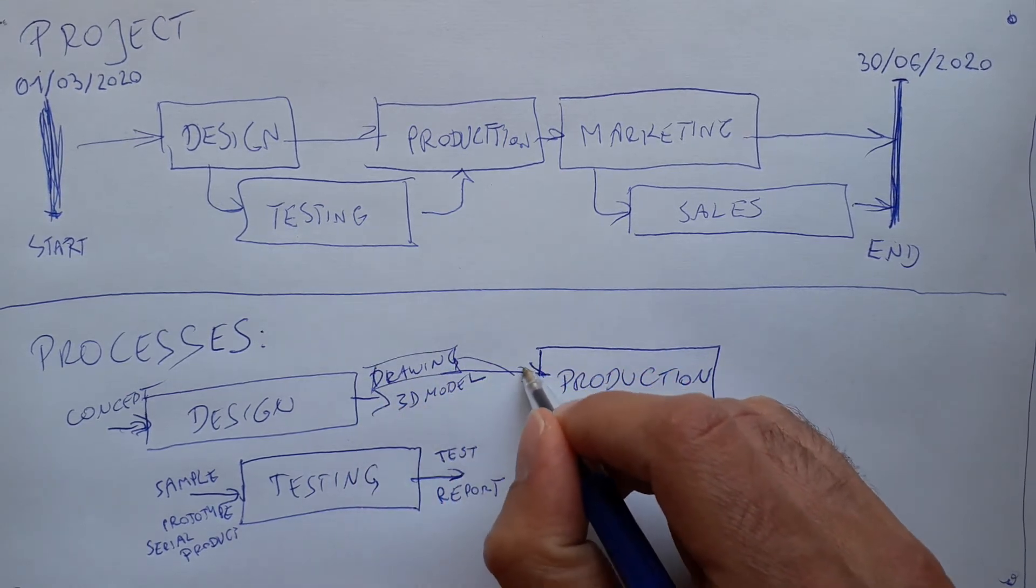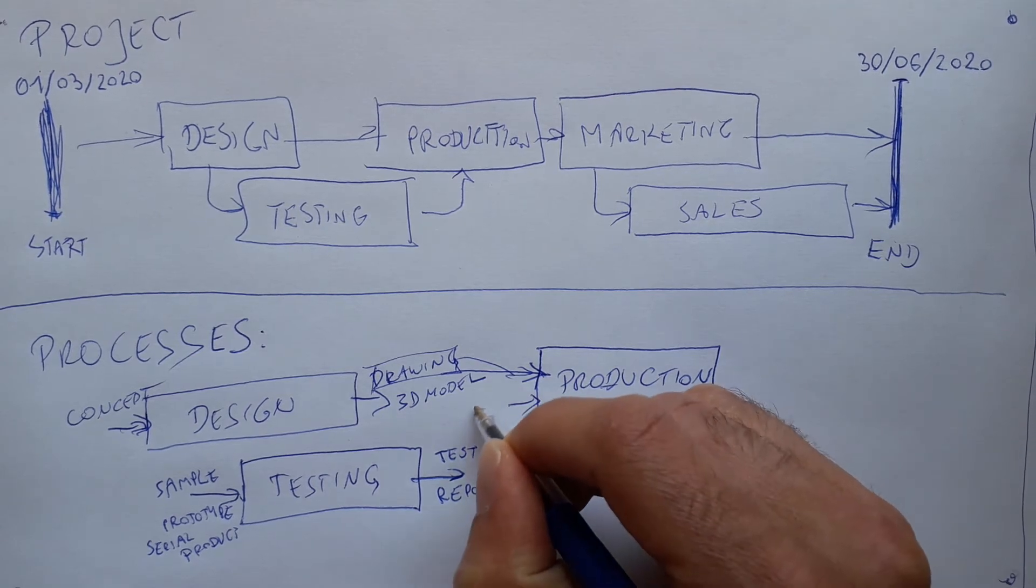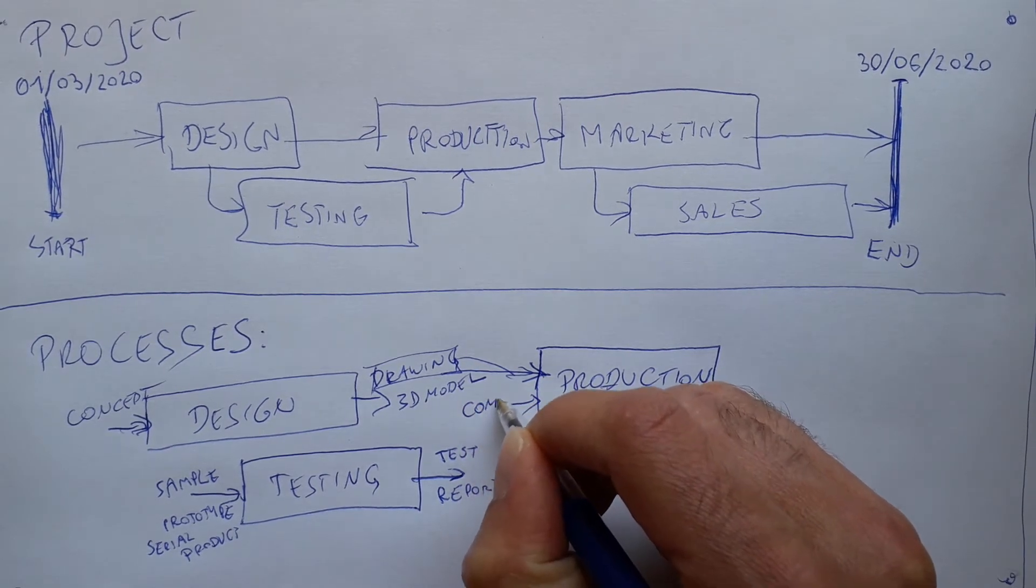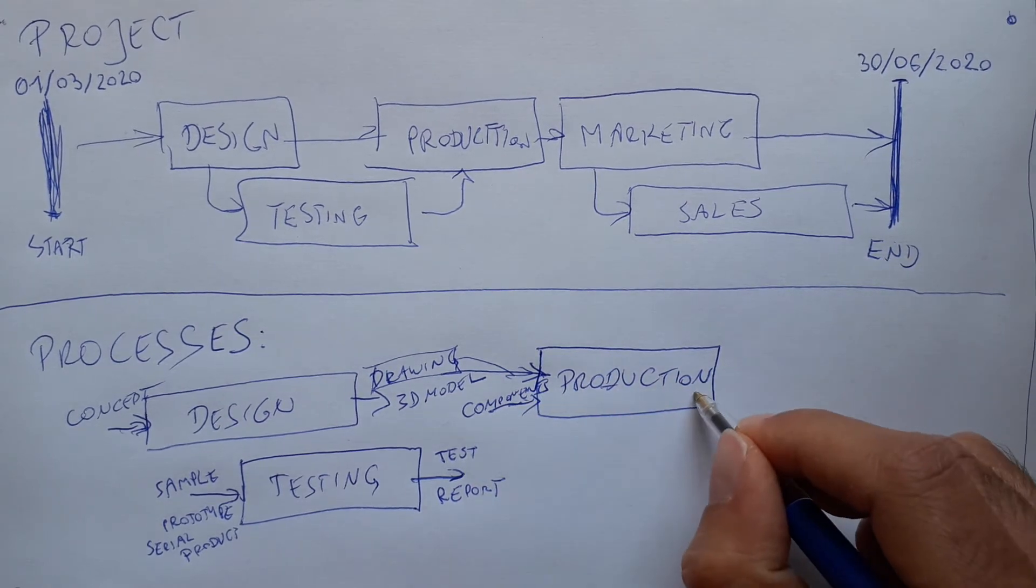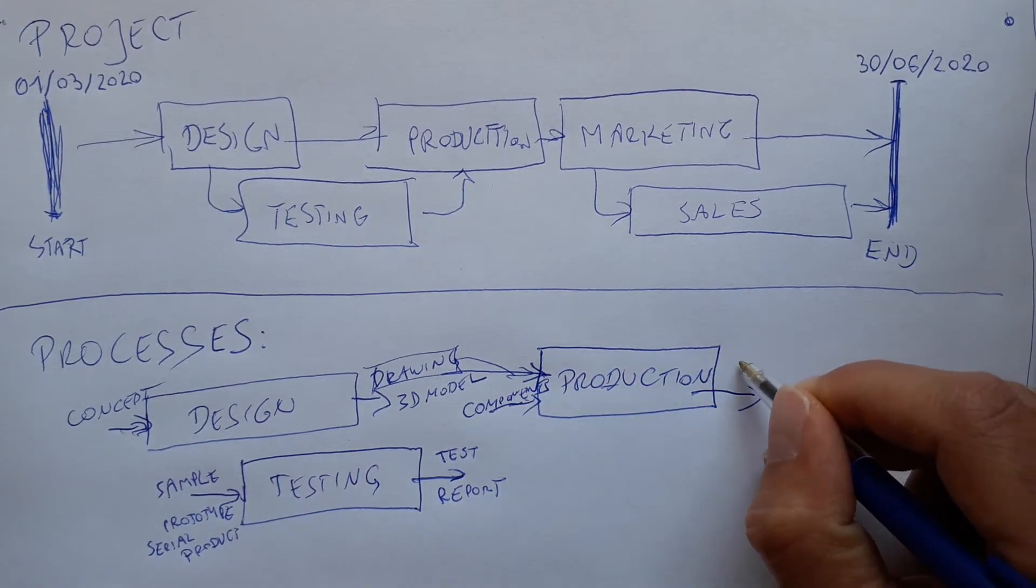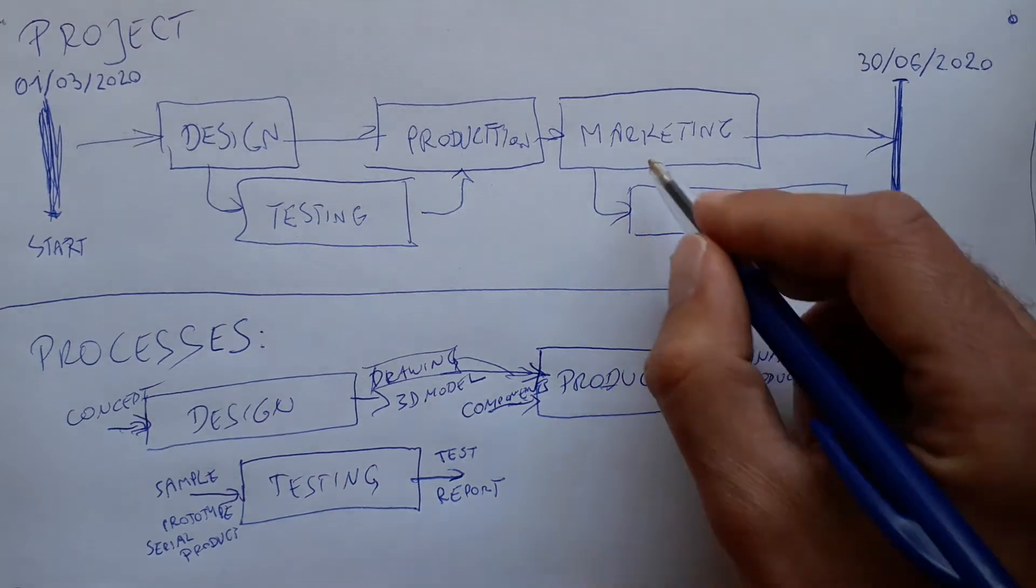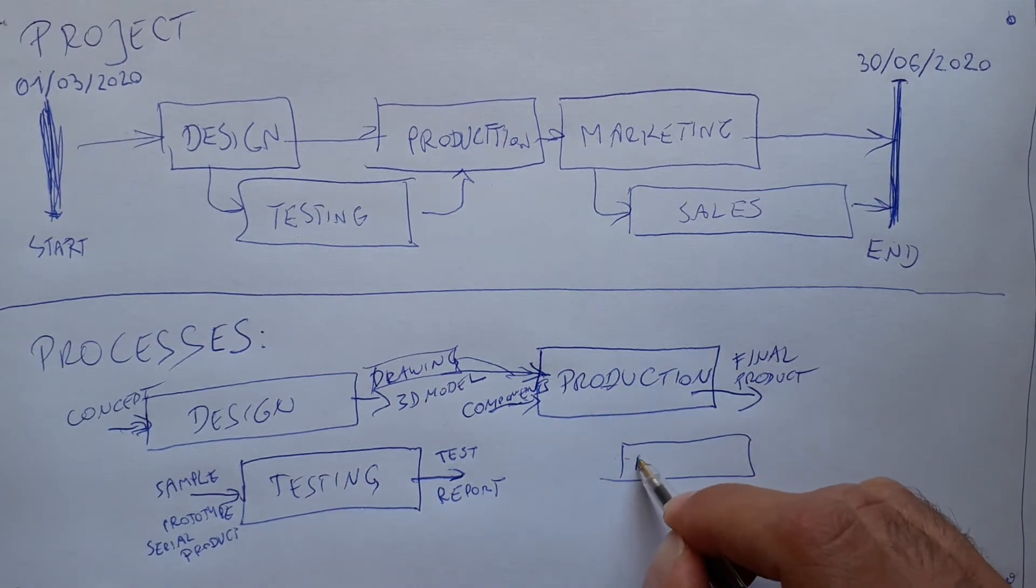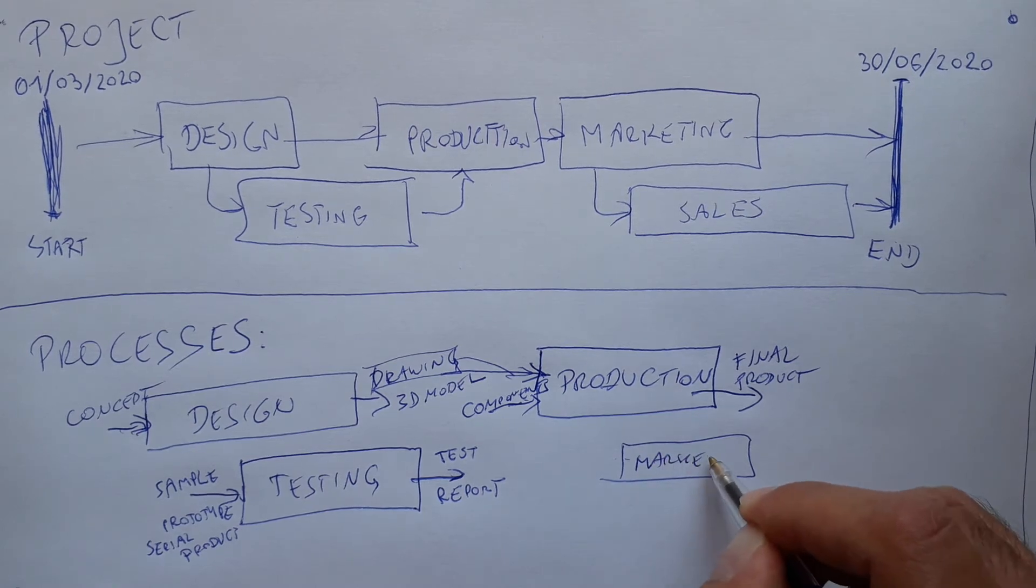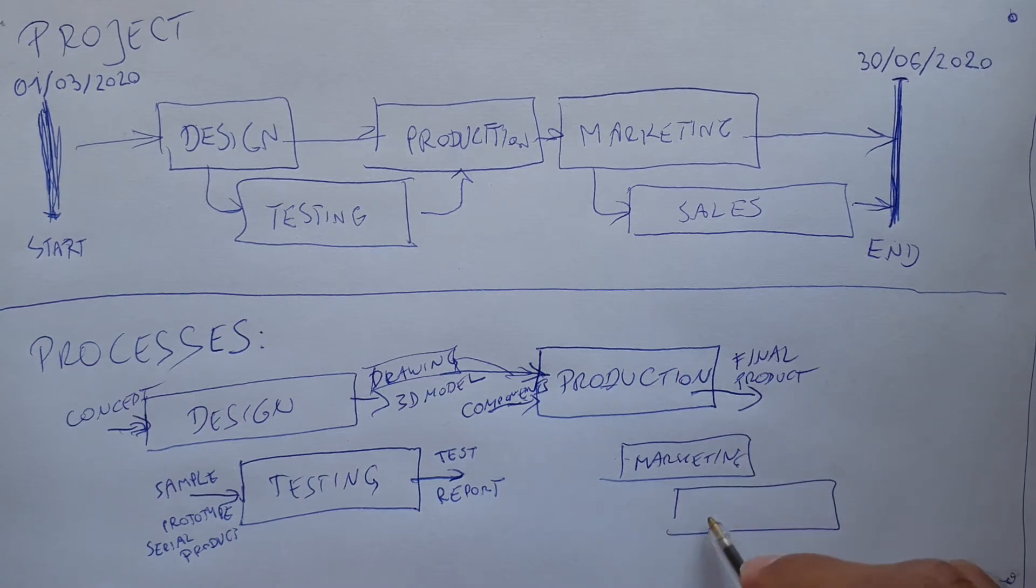Then we can have the production process. It's quite easy to understand. The production process will have as input actually the drawing, what I need to produce. The actual drawing needs to be fed into the production process, then the materials, so the components can be the input, and then production will be the finished or final product. For marketing and so on, you can have endless processes for marketing. You can have a process as well, we can talk about it later.